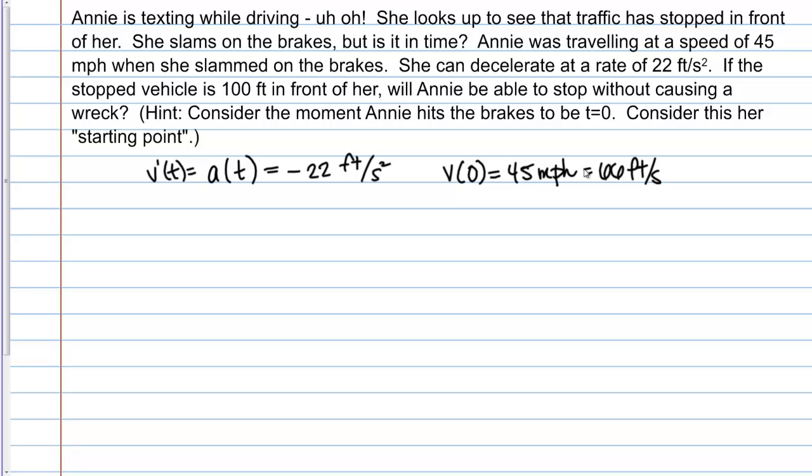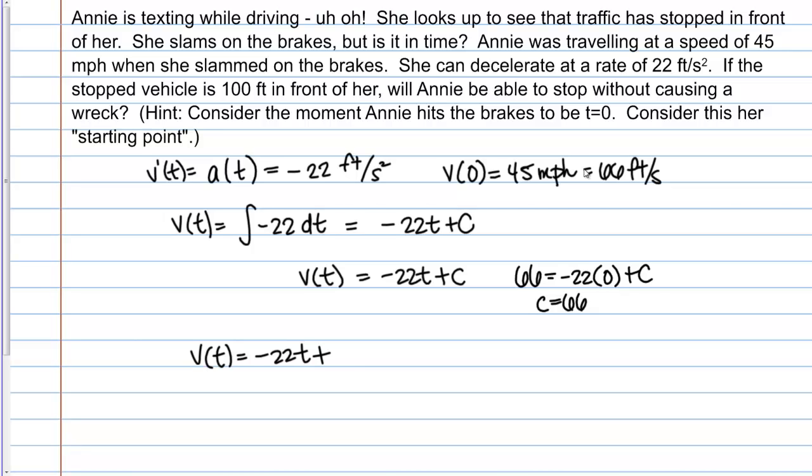Now this is going to be enough information for us to find a particular velocity function. So let's see what that looks like. So then velocity, we said, was going to be the anti-derivative of acceleration. So I'm doing the indefinite integral of negative 22. So what does that give me? Well, it gives me negative 22T plus C. And I'm going to use my initial condition to solve for C. So I know then, that when time equals 0, velocity is 66. So I just plug in that information. So 66 equals negative 22 times 0 plus C. So C equals 66. So then my velocity function is negative 22T plus 66. Let's start that. We'll definitely need to use that in the future.